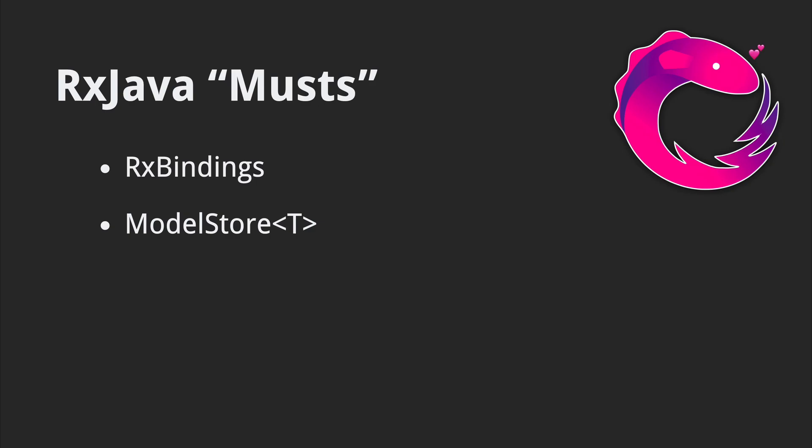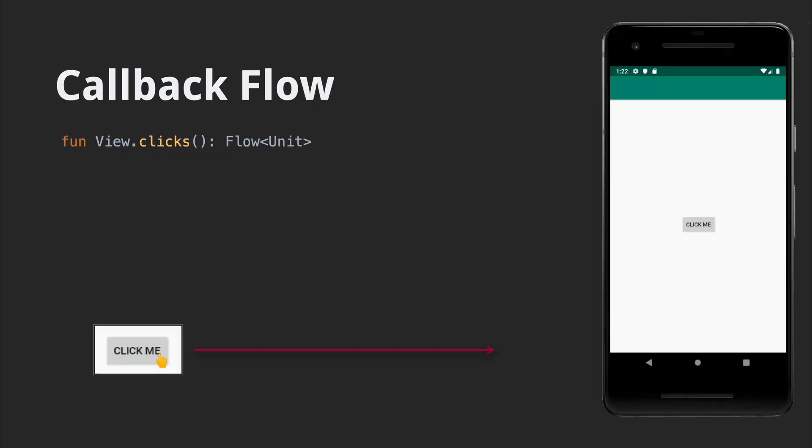Given that today we're exploring reactive patterns in Kotlin, let's look at a couple of must-haves that we'll want to carry over. I've picked two personal favorites for this video. RxBindings is a library that turns UI events into streams of events, and the model store pattern is quite similar to Redux — a small reactive state container library. Let's build our own RxBindings equivalent.